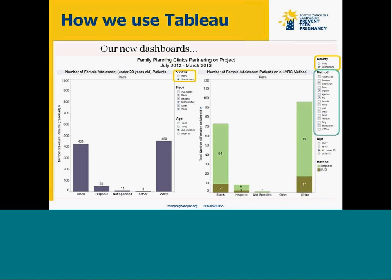We're also able to filter by age, which is really important for us. Previously, we've only looked at data for all adolescents under 20. In Tableau, we're able to easily break out this data. We saw that a wide majority of our patients are in the older age range, but it's really important that we get those older teens into the clinic and provide services especially to those teens who are sexually active. We know in South Carolina that 72% of all births to teens are to those older teens in the 18 to 19 year old age range, so it's important that these teens have access to services.